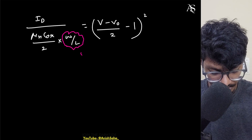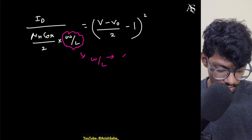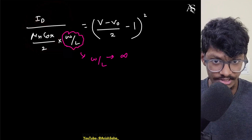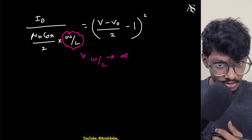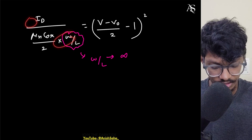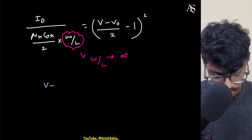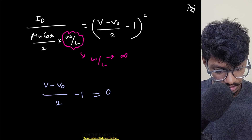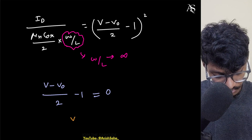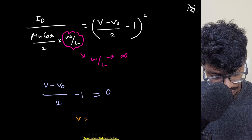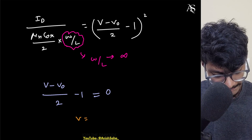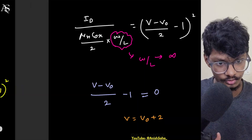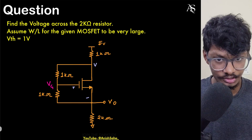The problem states W/L is tending towards infinity. If ID is finite and W/L → ∞, then the left-hand side tends to zero. So ((V − Vo)/2 − 1)² = 0, which gives (V − Vo)/2 = 1, meaning V = Vo + 2.